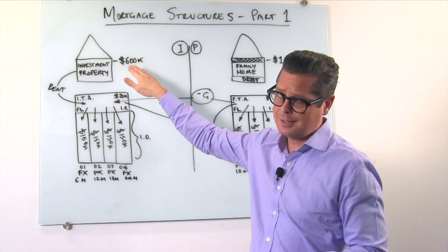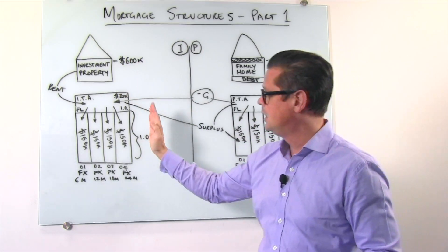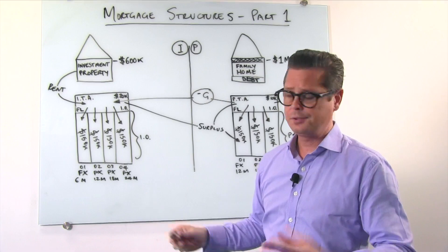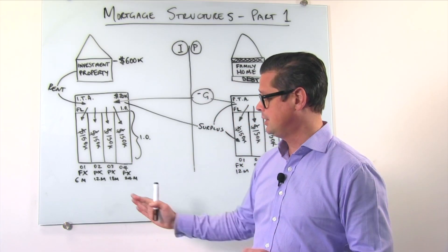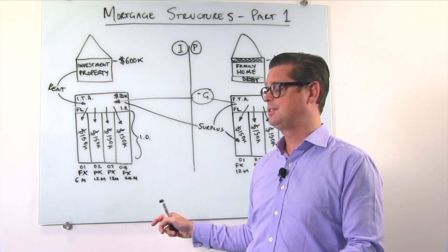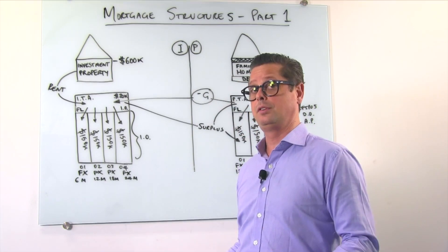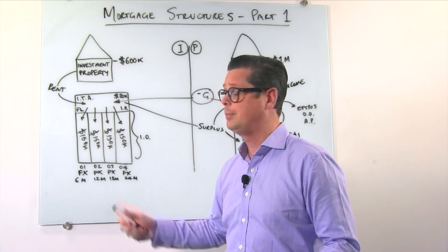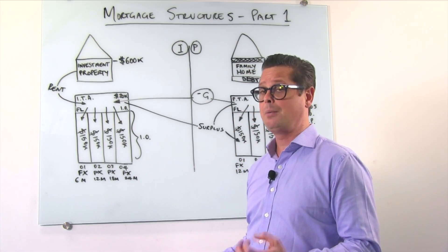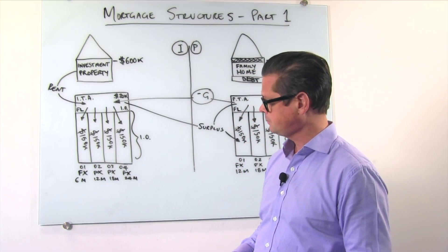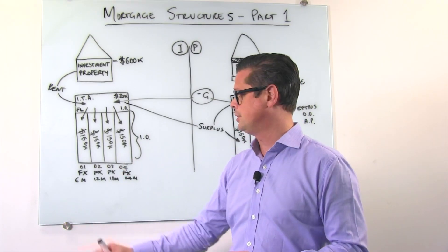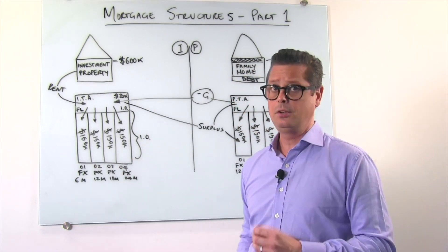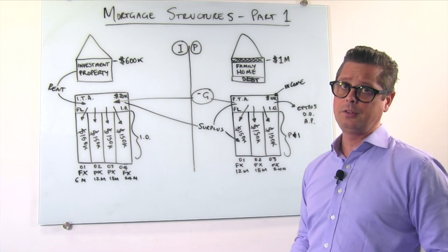We've chunked their $600,000 worth of debt into four increments across four different interest rates. And again, I must stress it would depend on where the market is as to how we would choose those interest rates. For example, sometimes we may have two or more on the same rate depending on what's going on. But again, we want that ongoing long-term diversification.